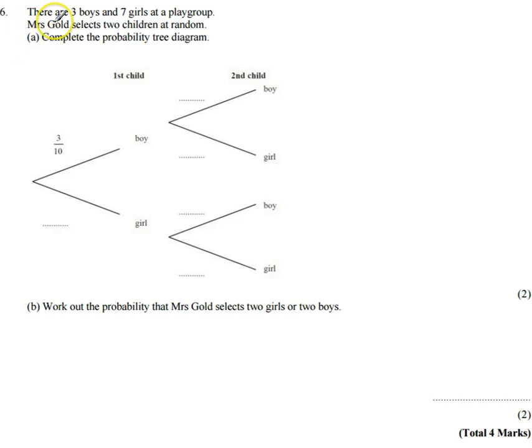Hi, in this question we're told that there are three boys and seven girls at the play group. Mrs. Gold selects two children at random. We want to complete the probability tree diagram.